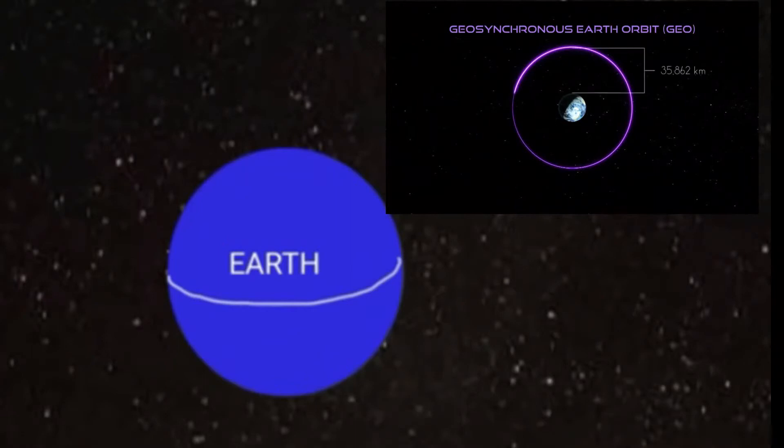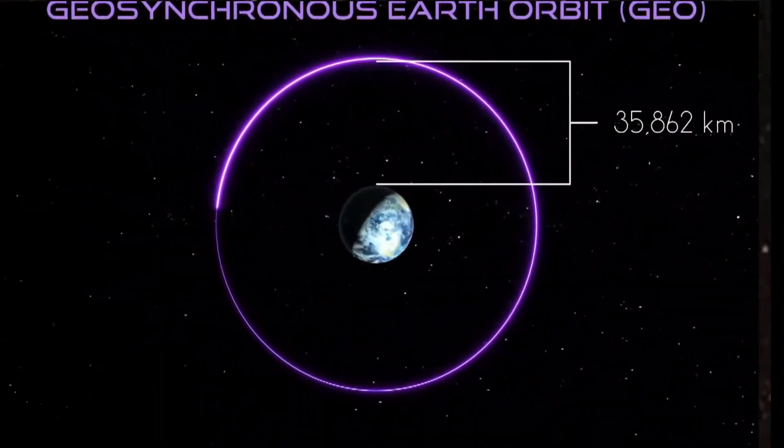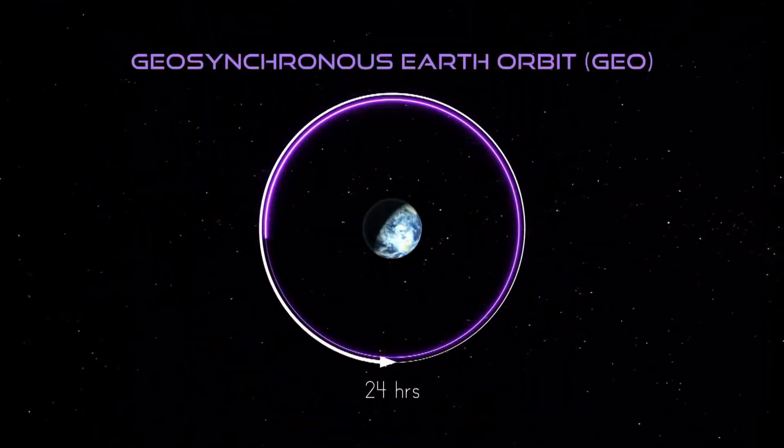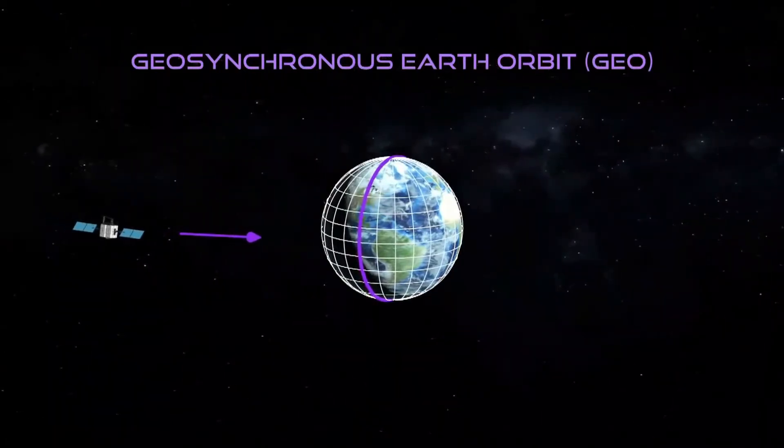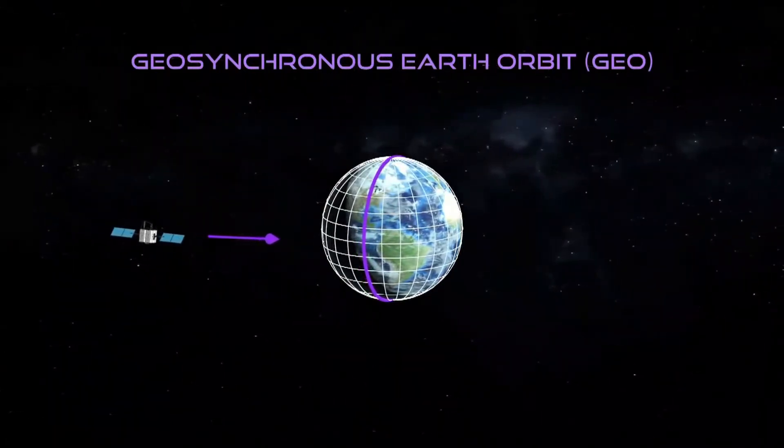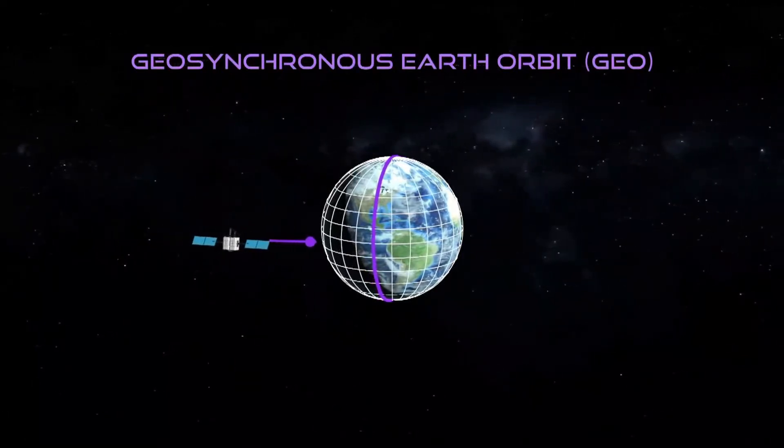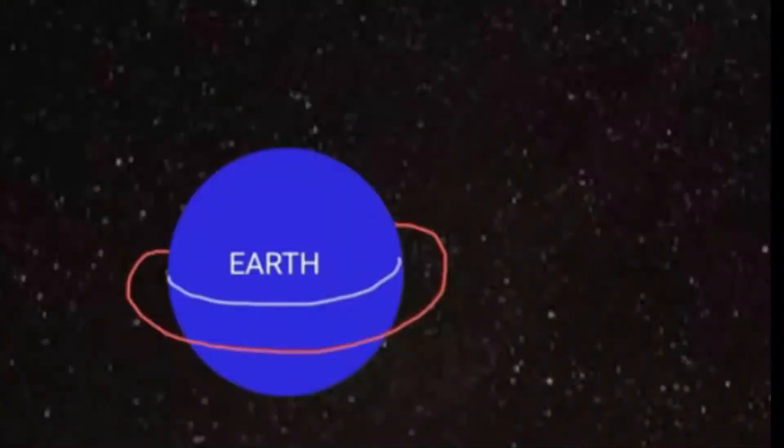Satellites have three distinct orbits. The distant satellites are placed about 36,000 kilometers above the Earth's surface with a revolution period of about 24 hours. That is why they are called geosynchronous or geostationary satellites.